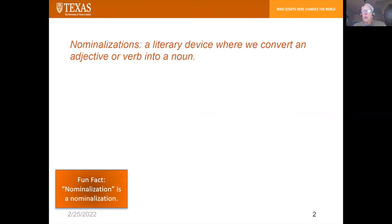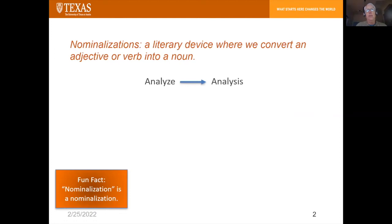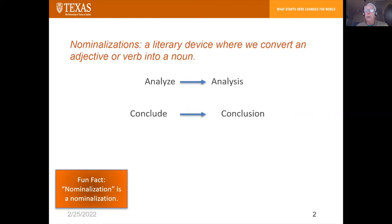Nominalizations occur when we take a perfectly good verb or an adjective and we nominalize it, or change it into a noun. Let me give you some examples. Analyze, a perfectly good verb, would become analysis. Conclude would become conclusion, and argue would become argument.